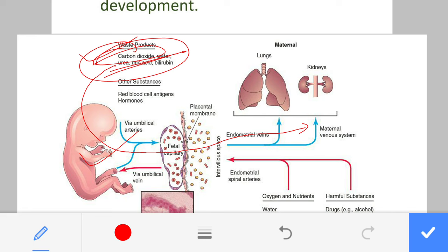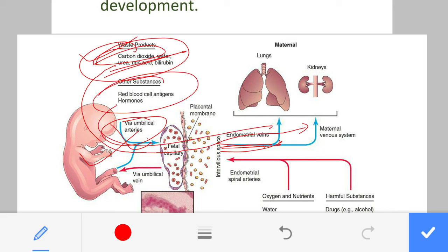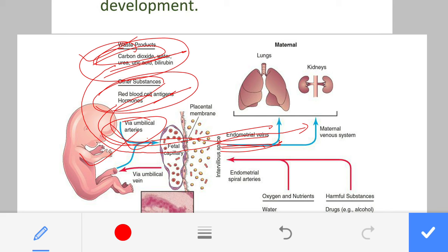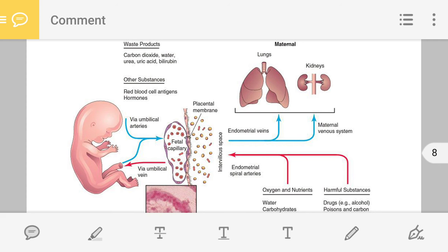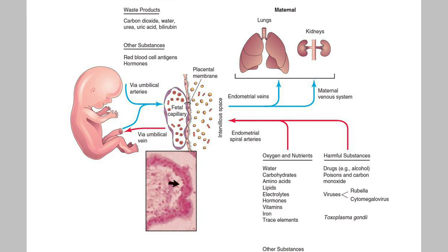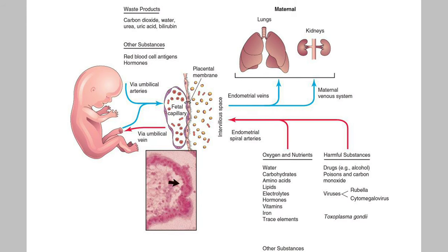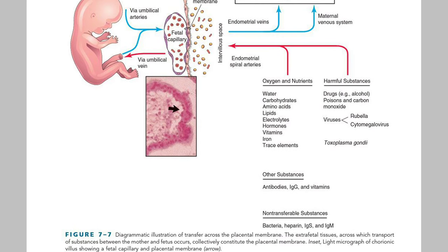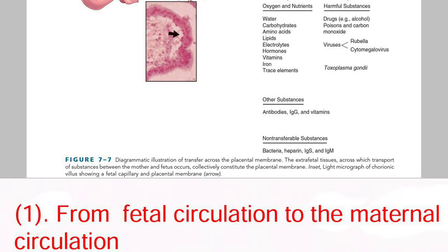The umbilical arteries and endometrial veins are shown here. Other substances transported from fetal to maternal circulation include red blood cell antigens and hormones. During your exam, if you prepare this chart it will be very handy to quickly prepare the functions of the placenta.